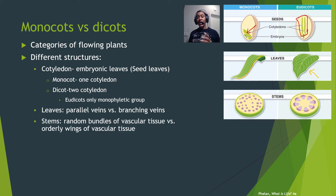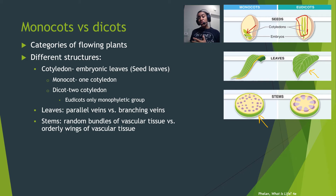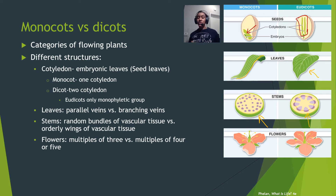Looking at the stem, one of the main structures we have are vascular bundles — tube-like structures that carry water and nutrients up and down the plant. In monocots, these bundles are randomly dispersed within the stem, appearing more haphazard. In dicots, there's a clear, organized pattern to where the vascular bundles are located.